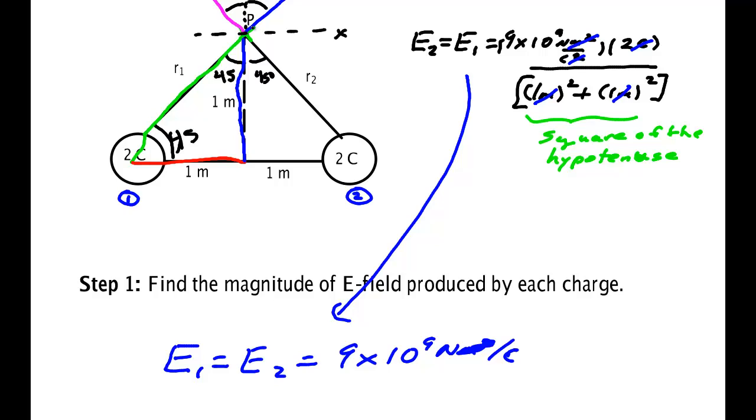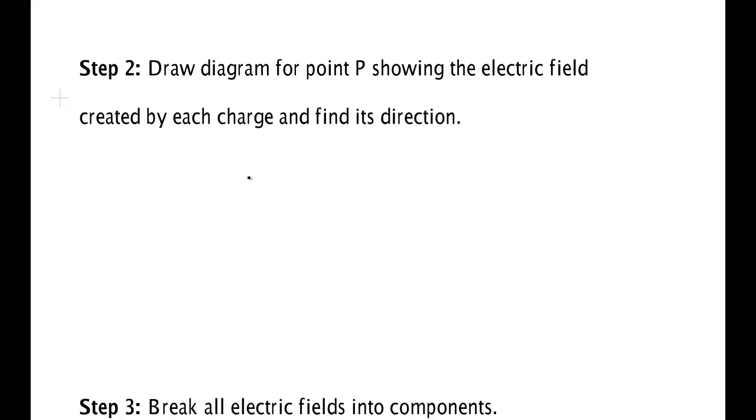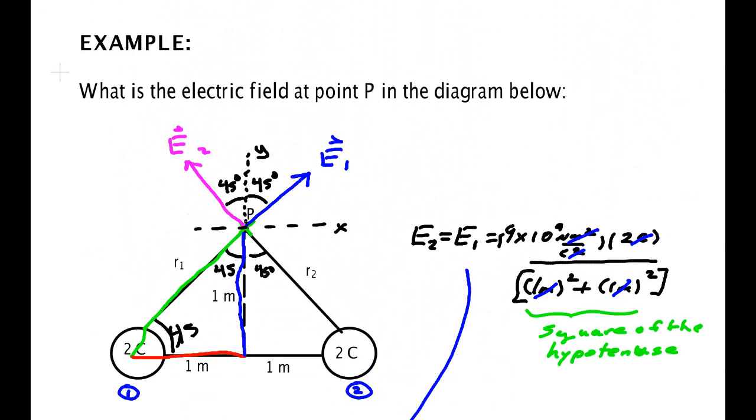Now that we have the magnitude, I can find the y and the x components. I've already drawn my diagram here. So see above. And for part three, I want to break all the electric fields into components. So E1x is simply E1 times the sine of 45 degrees. Let's make sure we go back and show you how I get that. I get that by saying here's E1, I'm looking for the x part, that's the opposite side.